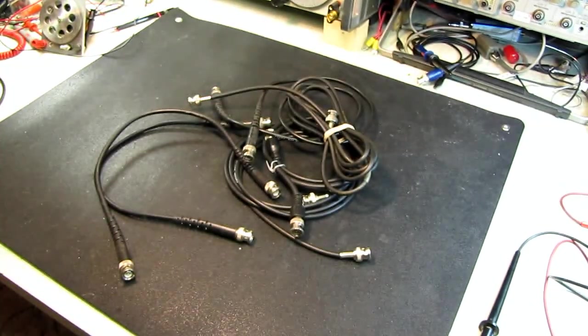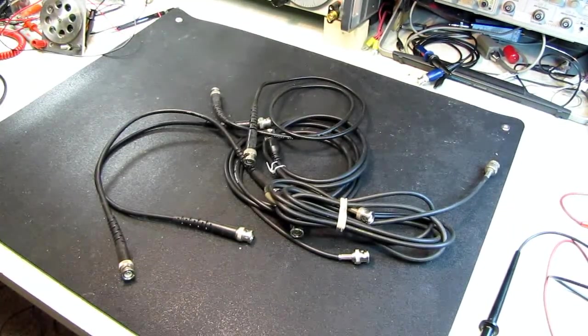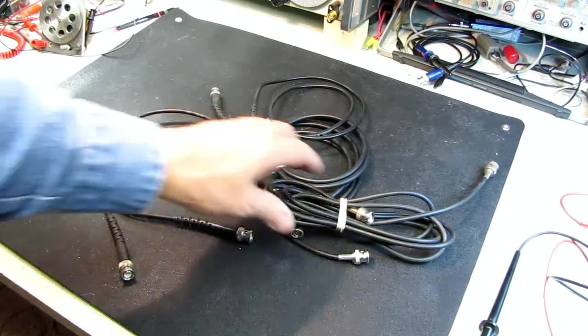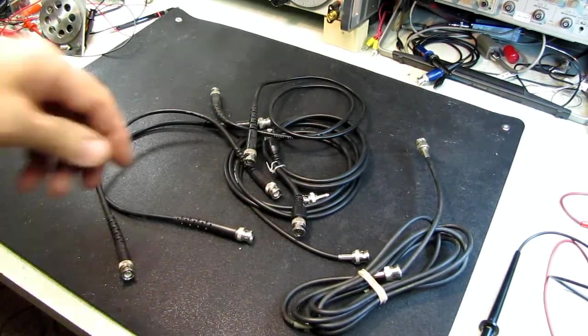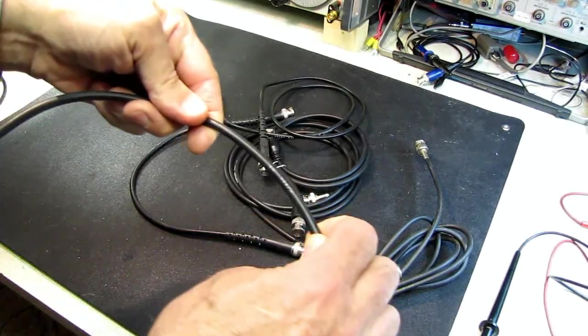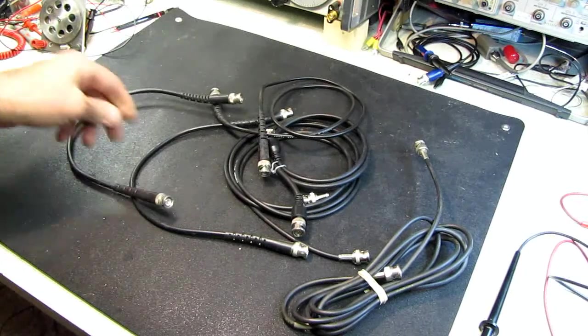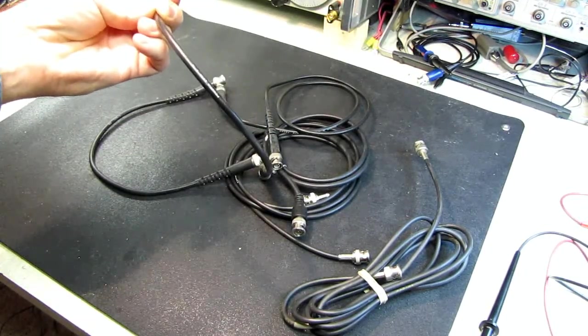Same thing with BNC jumpers - I never have enough laying around. The problem with these guys, and I think I paid 50 cents a piece, is you're never sure what the impedance is. Some might be marked RG-59U, you might be able to look that up.